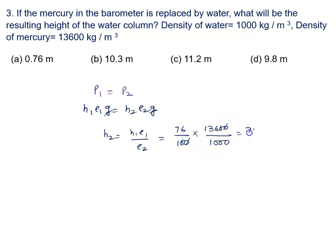What we will get? We will get 76 into 136 upon 1000. We will get 10.3 meter. So the right answer to this problem will be option B, that is 10.3 meter.